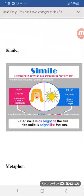Her smile is bright like the sun. The two words 'as' and 'like' are used in these examples. Here's another example: she is as beautiful as a rose, she is like a sun, or she is...